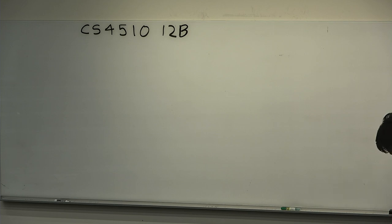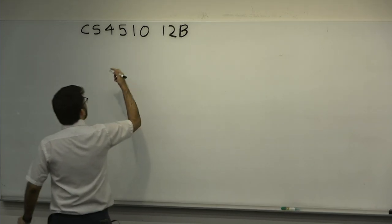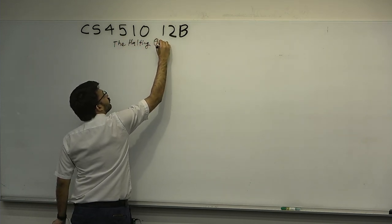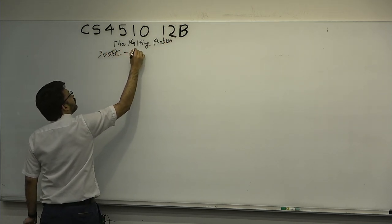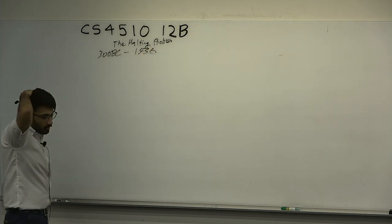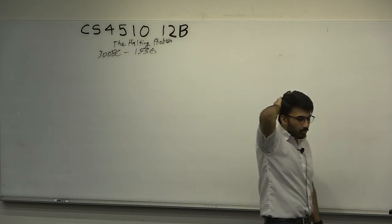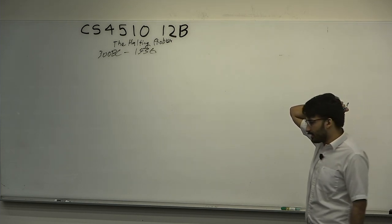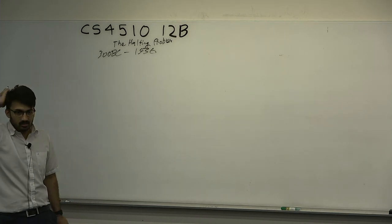All right, welcome to CS4510. This is the second half of Lecture 12—the most important lecture in the whole course. This is on the halting problem. This is the finale of our epic that began like 300 BC and ends with 1936. We're going to talk about one result today by Alan Turing, which cemented himself as the father of computer science—not only that, but with this result he founded the entire field of computer science and ended all of Hilbert's program.